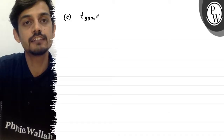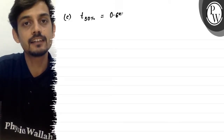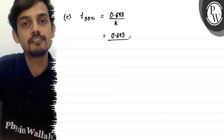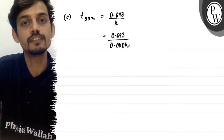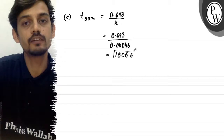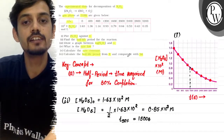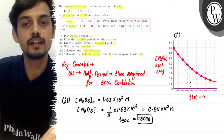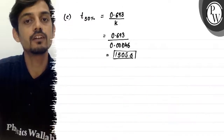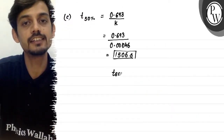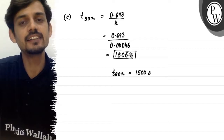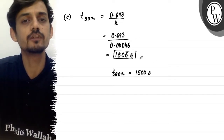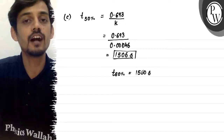For part 6, the half-life from the rate constant is given by t½ = 0.693 / k = 0.693 / 0.00046, which gives approximately 1506 seconds. The half-life from the graph in part 2 was approximately 1500 seconds. The difference is about 6 seconds, which arises from the experimental values that were plotted. This is the comparison of the half-life calculated in part 2.